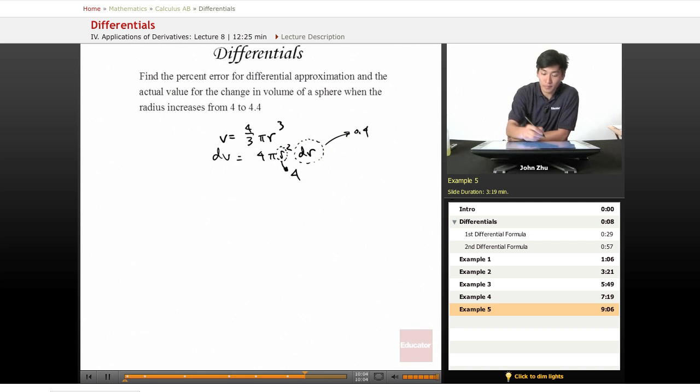The change in volume equals 4πr² times 0.4, which equals about 80.42.